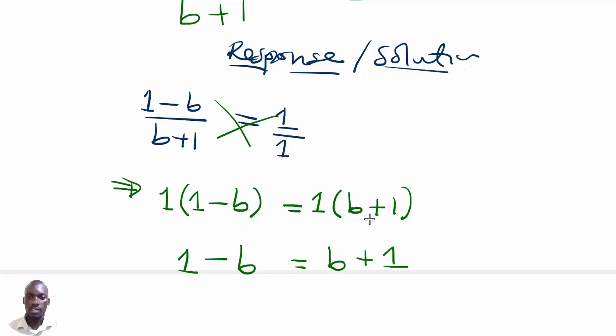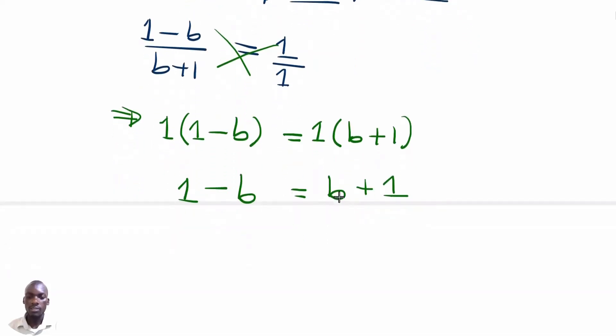Then the next step, we are going to collect like terms whereby let us make the b to be on one side of the equal sign. So we are going to have 1 minus b plus b, taking the b to the right hand side, being equal to b plus 1 then plus b.